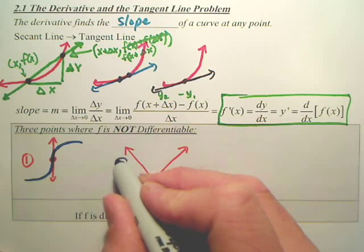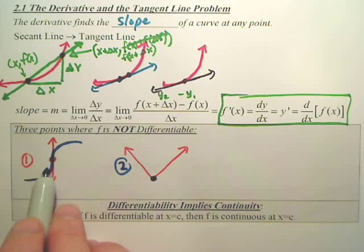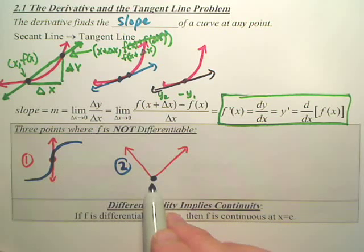This is example number two. Whenever it goes to a jagged edge, you do not have slopes, because you actually have two slopes and you can't choose. This slope is undefined. This slope is jagged. It has two slopes. You can't choose which one it is.